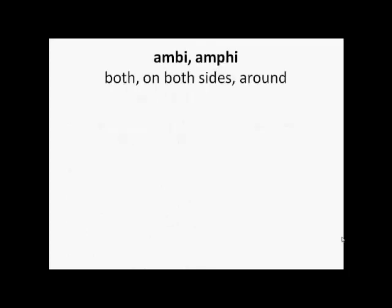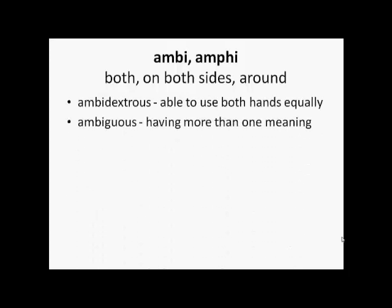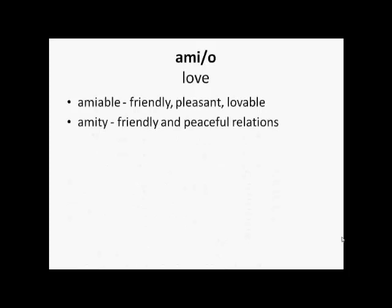'Ambi' or 'amphi' could mean both, on both sides or around. So ambidextrous means able to use both hands equally, and ambiguous is something which has more than one meaning. 'Ami' or 'amo' is love — so amiable is friendly, pleasant or lovable, and amity is friendly and peaceful.